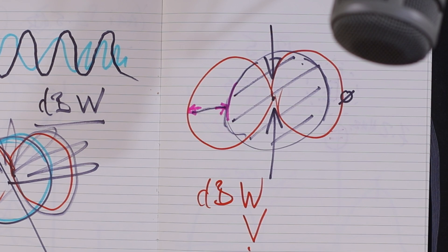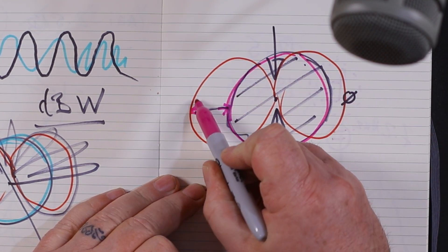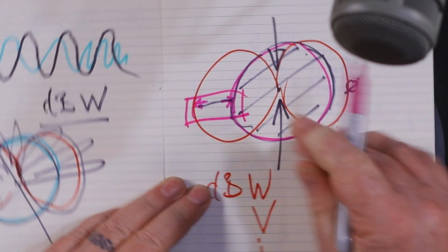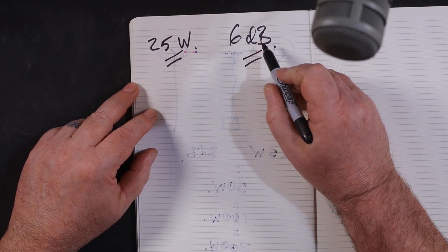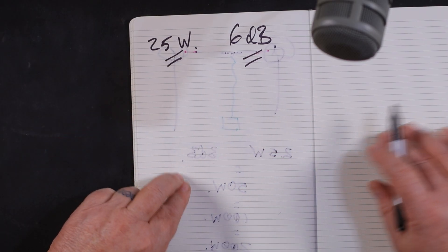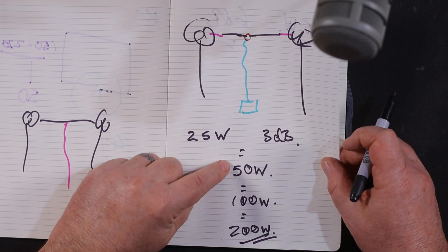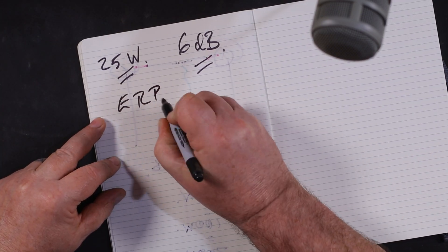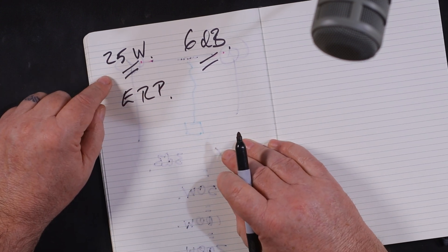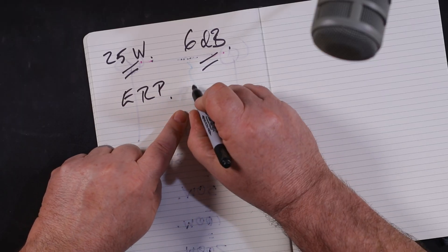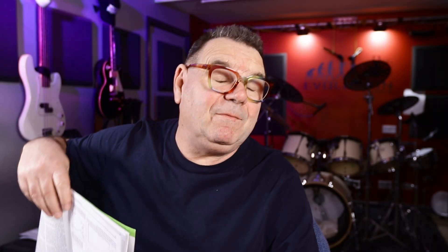We'll come back to that. Just to remind you — we covered the difference between dBi and dBd a few weeks ago. Effective radiated power is relative to a dipole. So if we've got 25 watts with a 6 dBd gain antenna, then just as we did a moment ago — 6 dB is going to be four times, so the effective radiated power of a 25 watt transceiver with a 6 dB gain antenna is 100 watts.